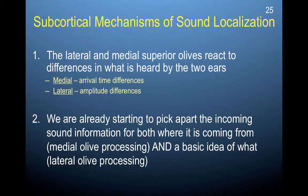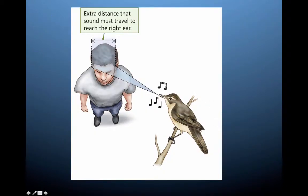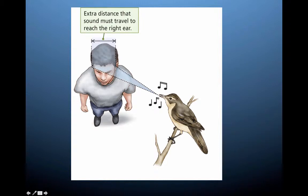We are already starting to pick apart incoming sound information for both where it is coming from and a basic idea of what it is — and this all happens before the information even gets to the cortex. For example, if you hear a bird singing, you'll have slight differences in arrival time and amplitude between your two ears. The ear closer to the sound gets an earlier arrival time and slightly higher amplitude, while the other ear gets a later arrival time and softer sound. This information starts to be combined in the superior olives very early in processing, so you can react as quickly as possible.